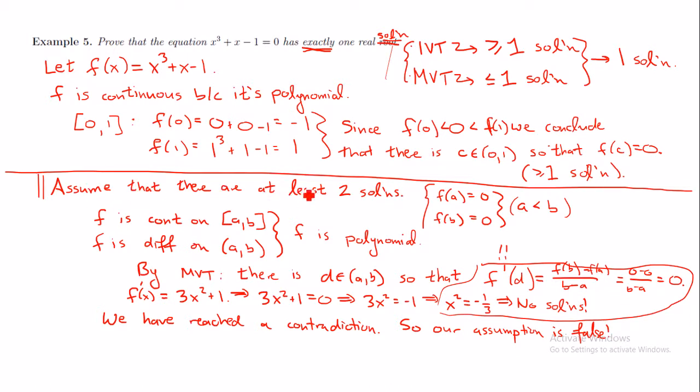And so our assumption was that there was at least two solutions, which means the opposite of this is there's at most one solution. Well, above we said there is at least one solution using IVT. Now, we say there's at most one solution using MVT. Together, these two parts imply that we have exactly one solution to this equation.